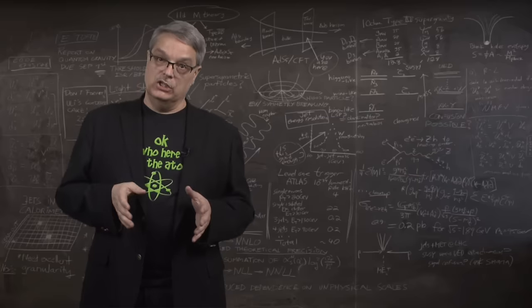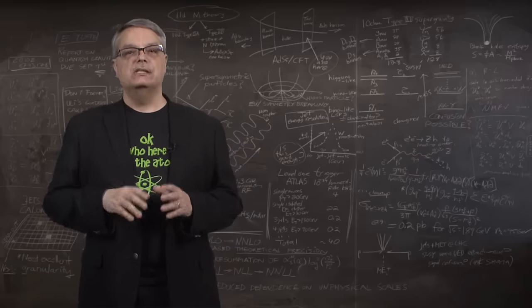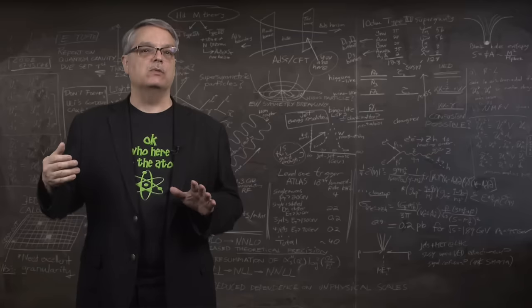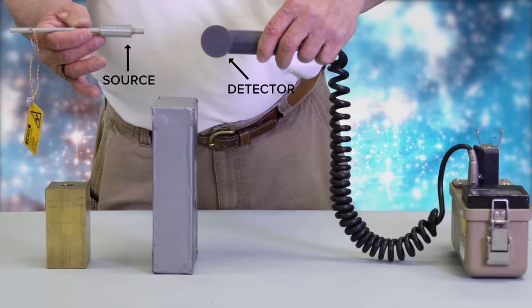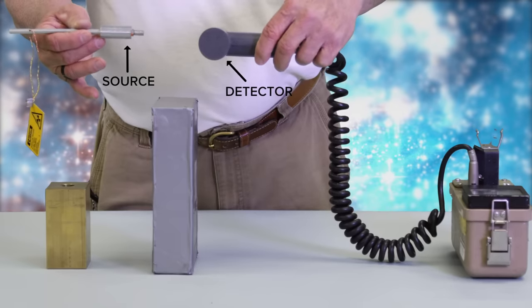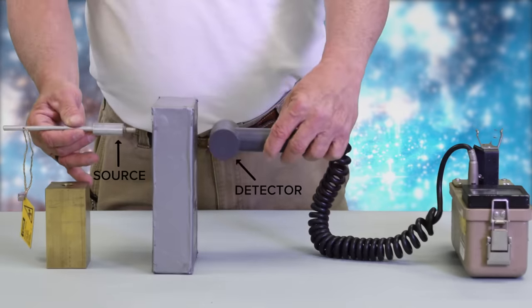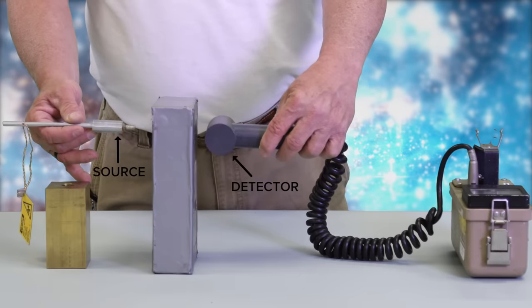Gamma radiation consists of fast moving particles with no electric charge. This means they emit no electric fields to interact with matter. They are therefore much harder to stop. To stop gamma rays, you need a heftier chunk of dense material like lead. This is also true for x-rays, which is why they put a lead apron on you when you're getting dental x-rays.